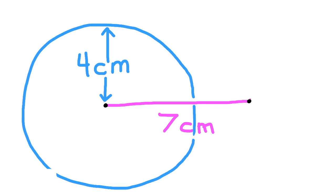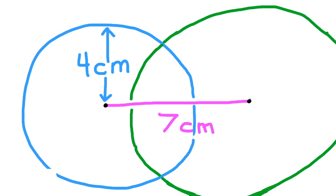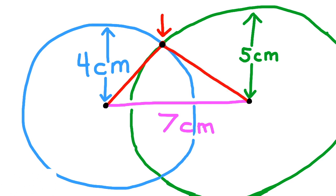Here's an example: draw the side length 7 centimeters, and then on one end of that side length draw a 4 centimeter radius, and on the other end draw a 5 centimeter radius. The area where those two circles meet is where the other two side lengths will meet, and those side lengths will be the same length as the two radii: 4 centimeters and 5 centimeters.